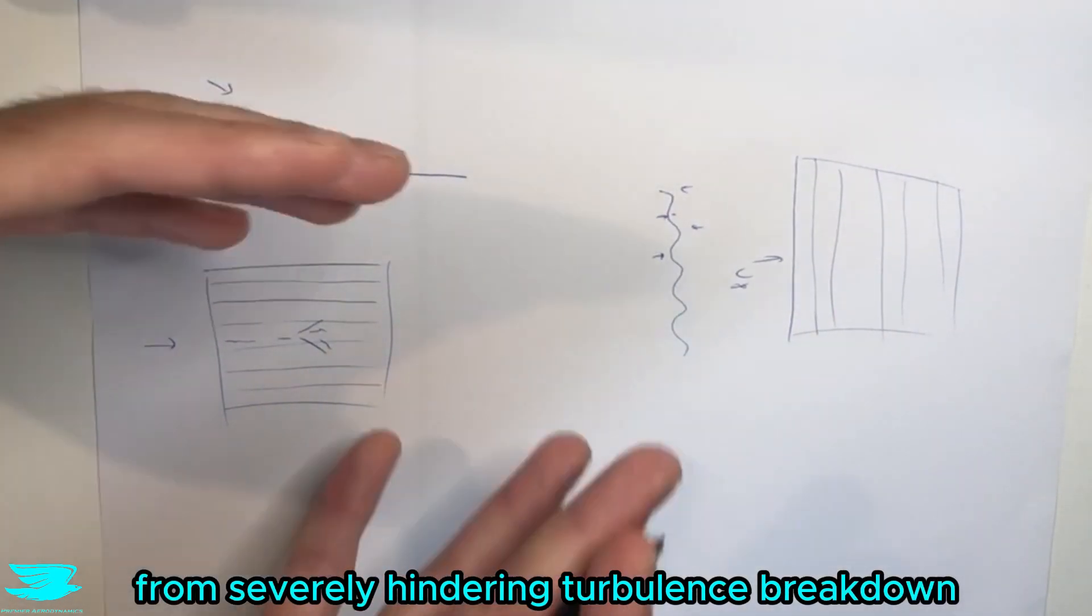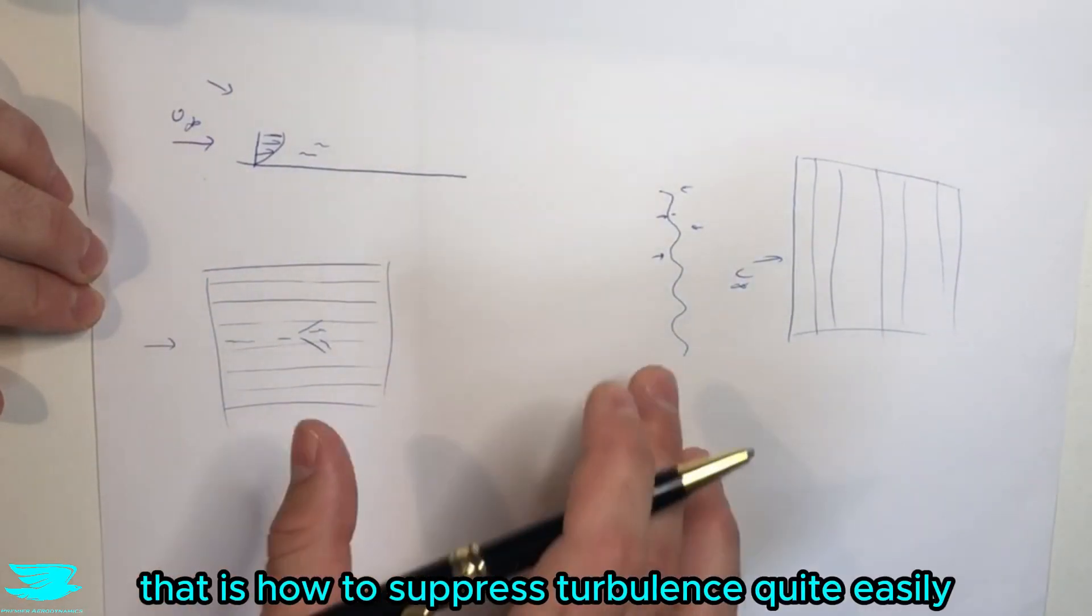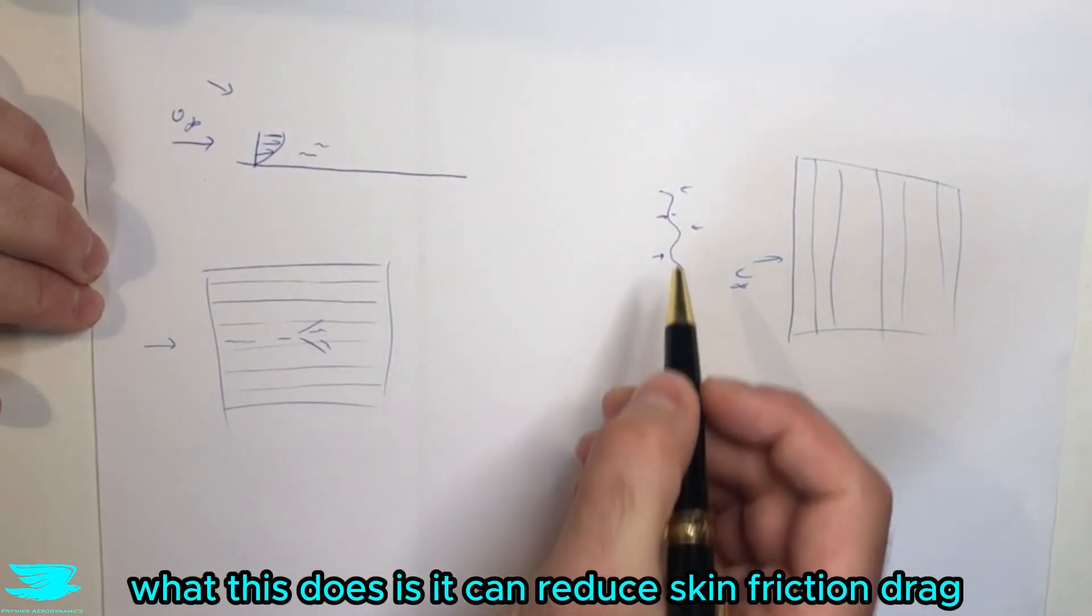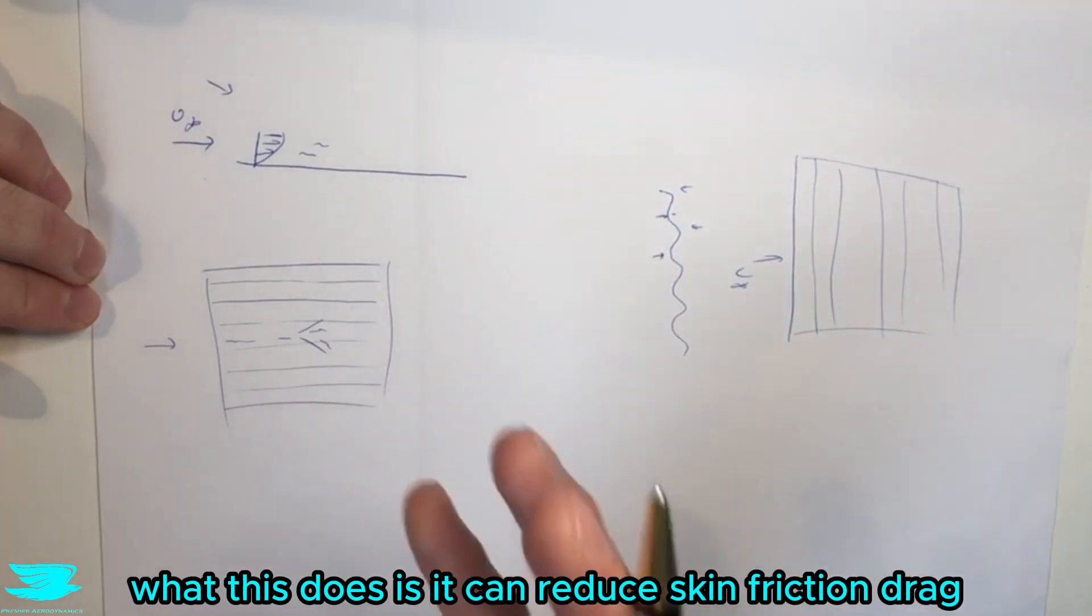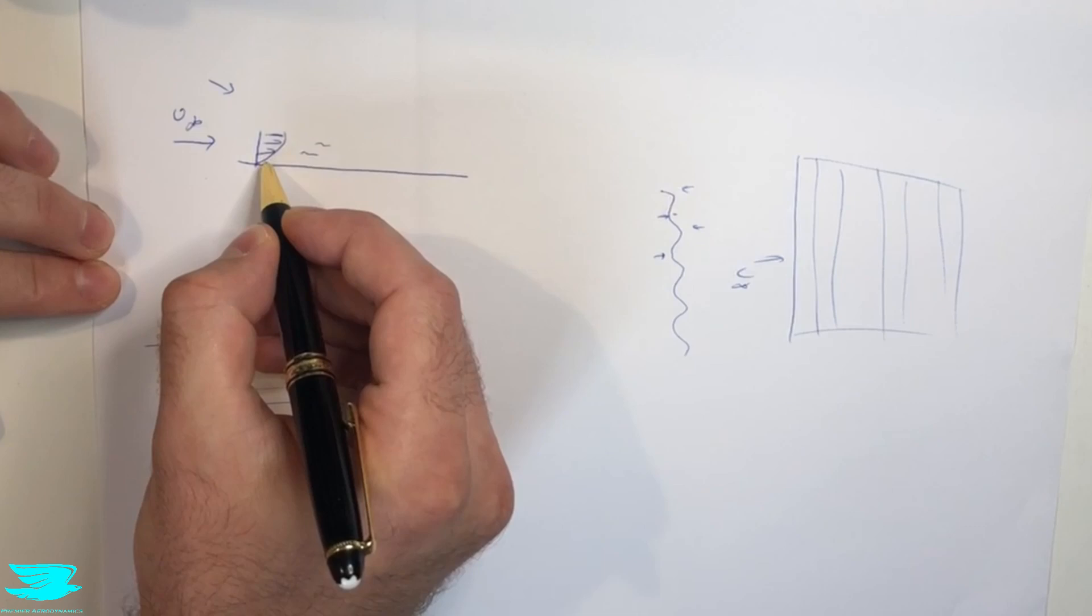severely hindering turbulent breakdown to severely encouraging it. So that is how to suppress turbulence quite easily. What this does is it can reduce the skin friction drag because the boundary layer is now going to have a much slower velocity